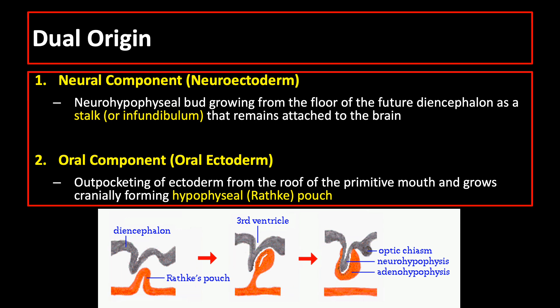Because of the dual origin of the pituitary gland, it actually consists of two glands: the posteriorly located neurohypophysis and the anteriorly located adenohypophysis.